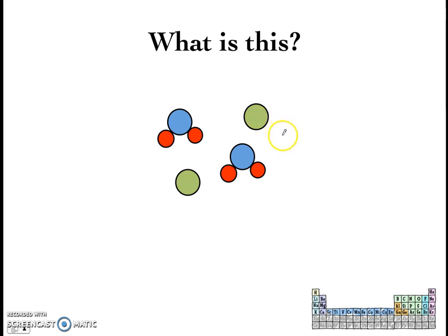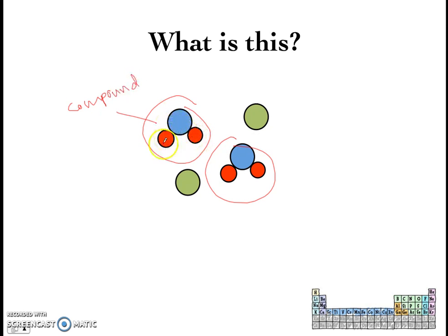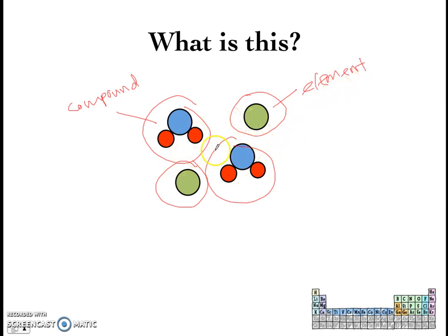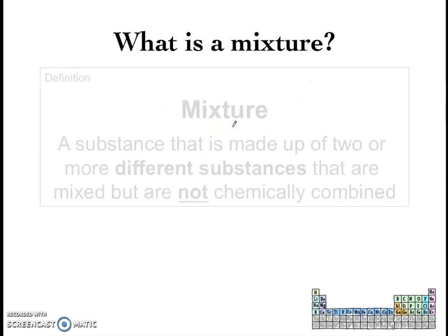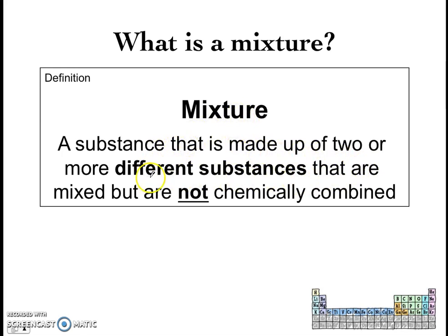Let's look at one more example. What is this? You might have said this first part is a compound — a compound made out of two different elements, the red and the blue, combined together. But what about this other part? There's only one type of atom here — the green one — and it's not combined with anything else. So this is an element. What we have here is a mixture of an element, the green one, and the compound, the blue and red combined. It's a mixture because the element is not combined with the compound — they just mix together and are separate from one another. A mixture is made up of two or more different substances which are mixed together but are not chemically combined.